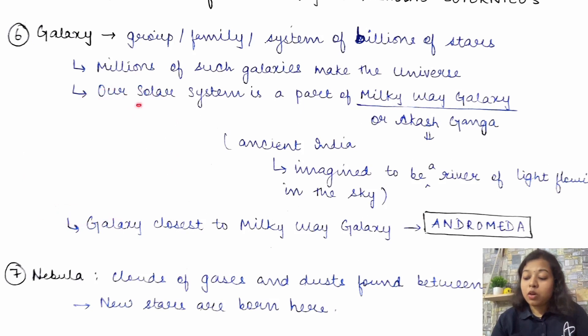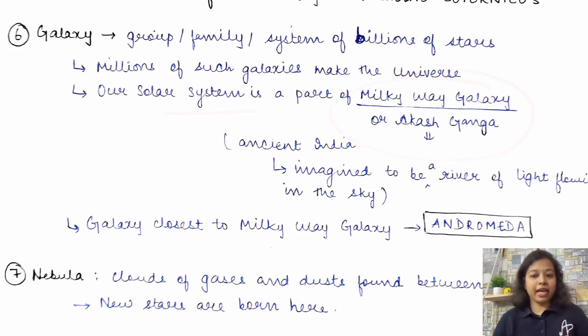Thik hai? Ab ye to ho gaya. Now, our solar system. I will introduce you to this term also. Do not worry. Our solar system. Yaani ki, jo sun hain and around which the planet reverts. That is our solar system. That is the family of the sun. So, our solar system, of course, would be a part of any galaxy. Because the sun is a star and galaxy is a group of stars. So, it has to belong to some galaxy.